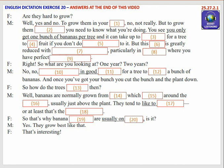You only get one bunch of bananas per tree, and it can take up to three years for a tree to bear fruit if you don't do anything special to it. But this period is greatly reduced with modern growing methods, particularly in plantations where you have perfect tropical conditions.